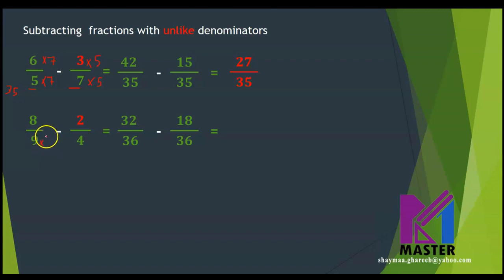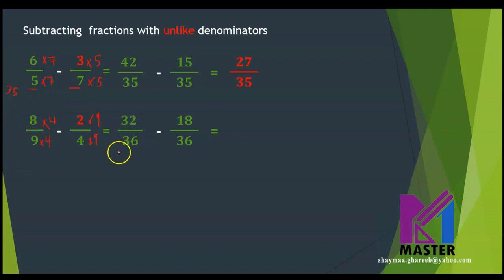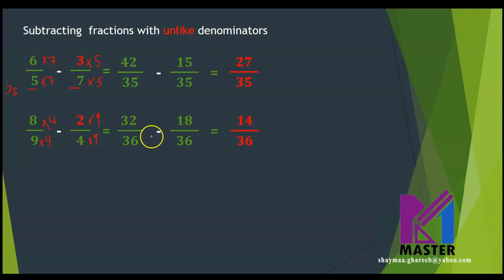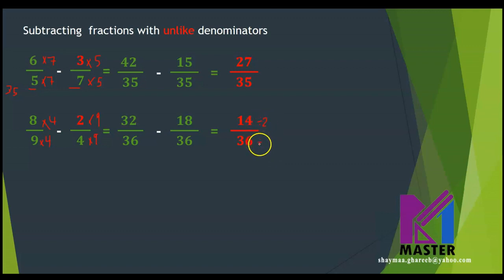So the 9 becomes 36 by multiplying by 4 up and down, and the 4 becomes 36 by multiplying by 9 up and down. The first fraction will be 32 over 36 and the second fraction will be 18 over 36. When you do the subtraction: 32 minus 18 equals 14, so the answer will be 14 over 36. Is this the simplest form? No, so I will simplify the fraction by dividing up and down by 2, giving 7 over 18.